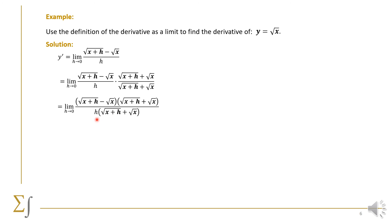We rewrite the expression — keeping the denominator h as it is — and in the numerator we recognize the difference of two squares: (√(x+h) minus √x)(√(x+h) plus √x) equals (x+h) minus x. So we arrive at (x+h) minus x, all over h times (√(x+h) plus √x).